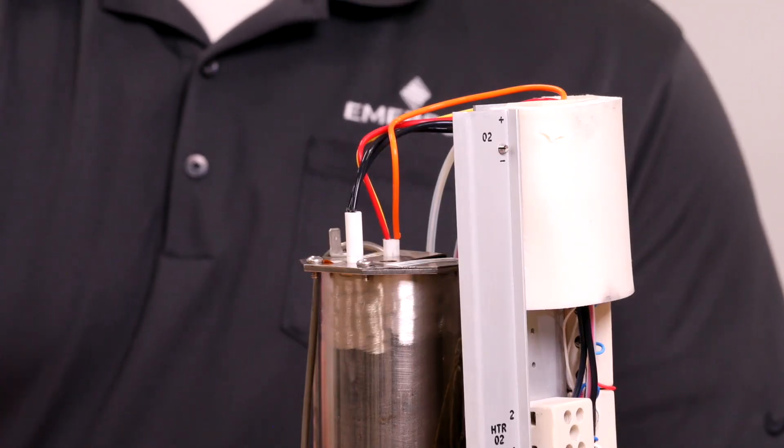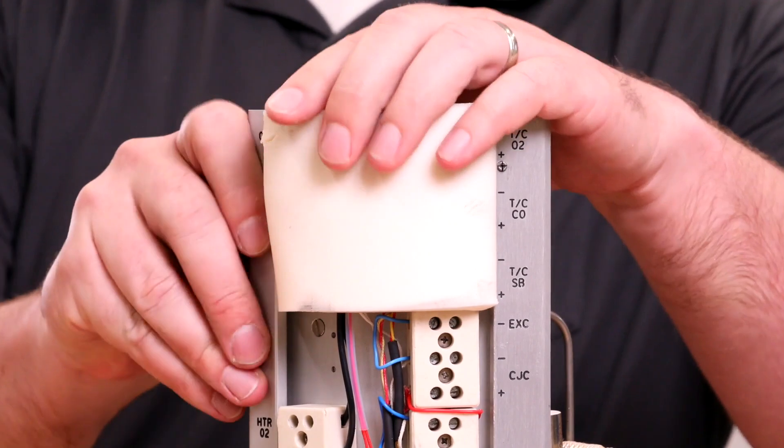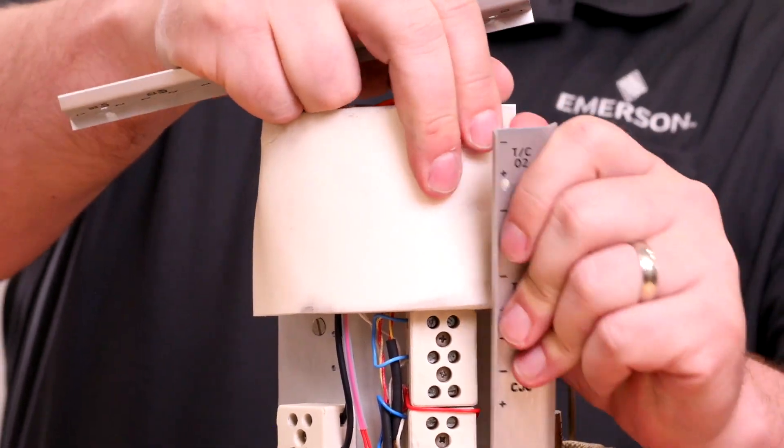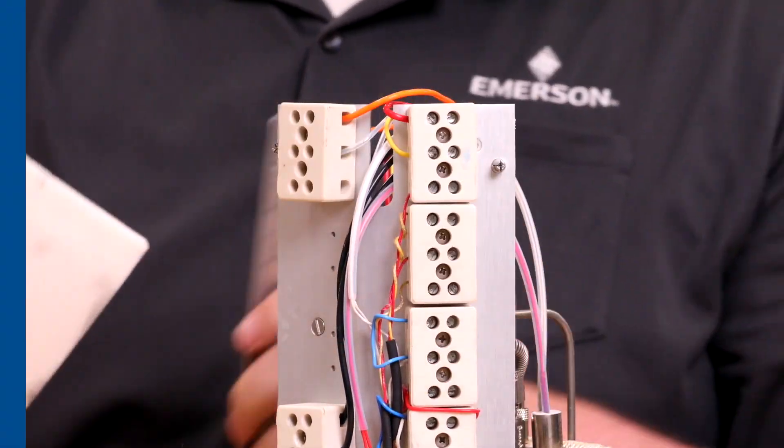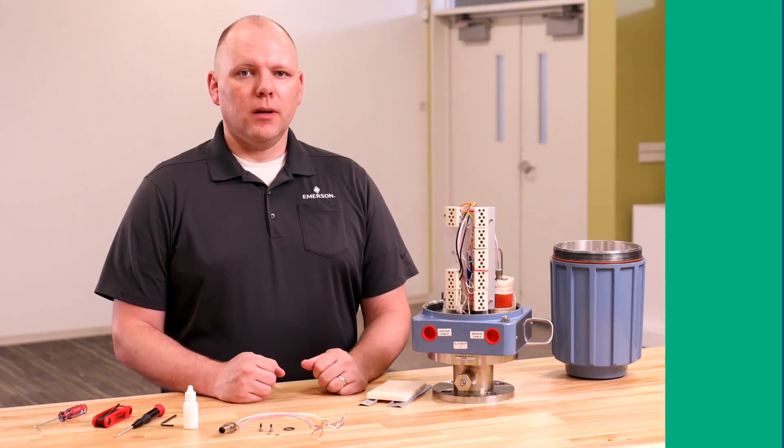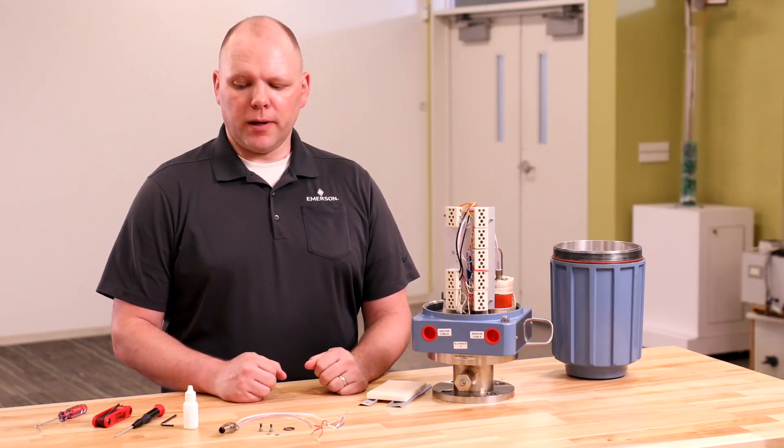Next, unsnap the terminal marking plates and remove the terminal insulator. Disconnect the combustible sensor wires from the terminal block.